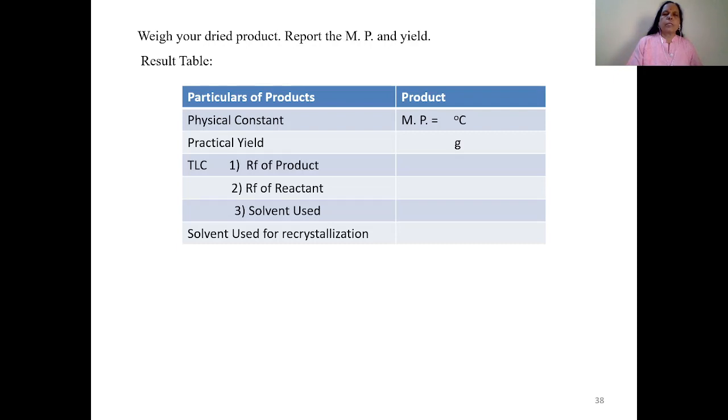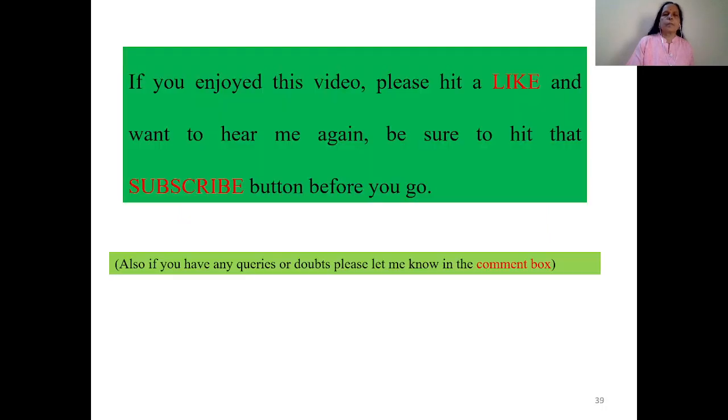Now after TLC, take weight of that dried product, report melting point and yield, and then write down your result in tabular form. So mention physical constant, then practical yield. Then for TLC, mention what is Rf of product, Rf of reactant, and which solvent you used to run that TLC plate. And lastly, solvent used for recrystallization. Now if you enjoyed this video, please hit a like, and if you want to hear me again, be sure to hit that subscribe button before you go. And most important, if you have any queries or doubt, please let me know in the comment box. Thank you very much.